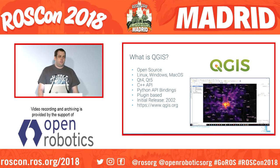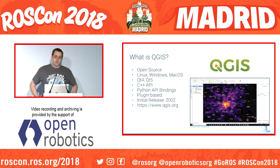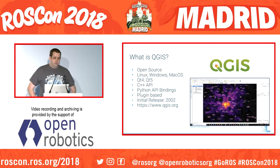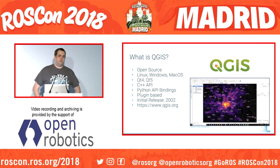One implementation of a GIS environment is QGIS. QGIS is a Qt application that runs comfortably in Ubuntu with both a C++ and a Python API, and I think the use of these technologies likely makes QGIS a natural fit for the ROS community.